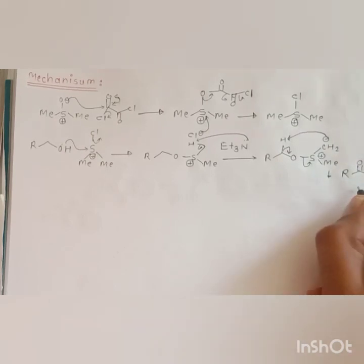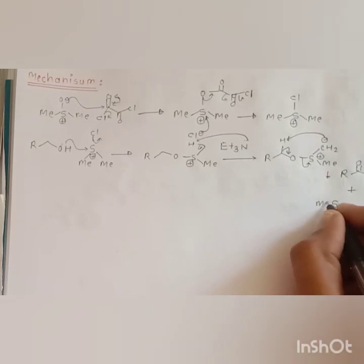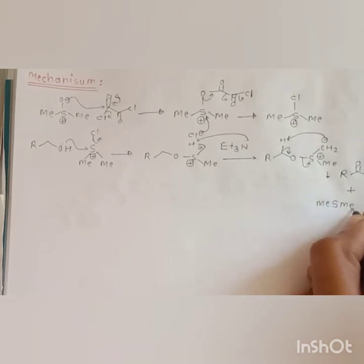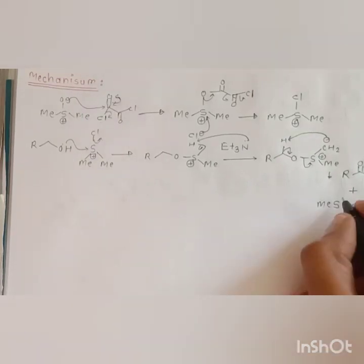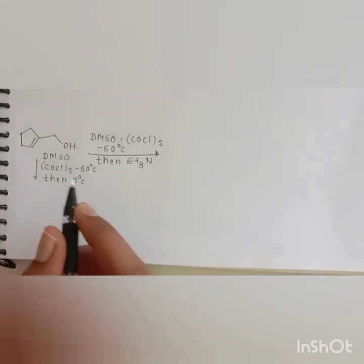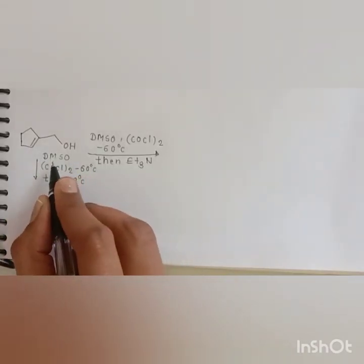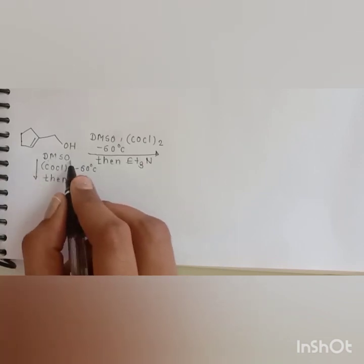With the formation of aldehyde takes place. Now in this example, in presence of the DMSO oxidation condition, that is DMSO and oxalyl chloride, we first get the intermediate that is the dimethyl sulfonium chloride.